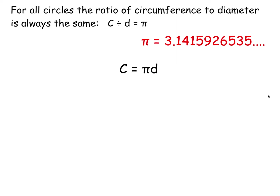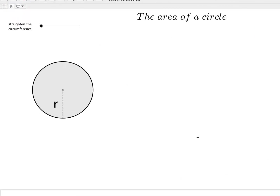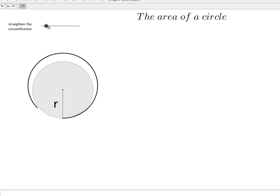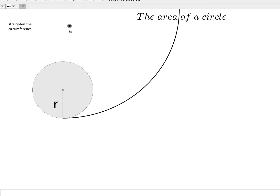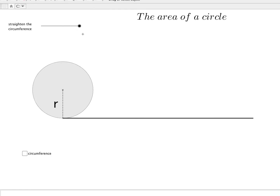We also want a formula for the area. Here is an illustration — a circle of radius r, with its circumference as the black outline. If we straighten out the circumference again as we did before, that distance is pi d. Since the diameter is twice the radius, we can write it as 2 pi r. So that line is the straightened out circumference: 2 pi r.